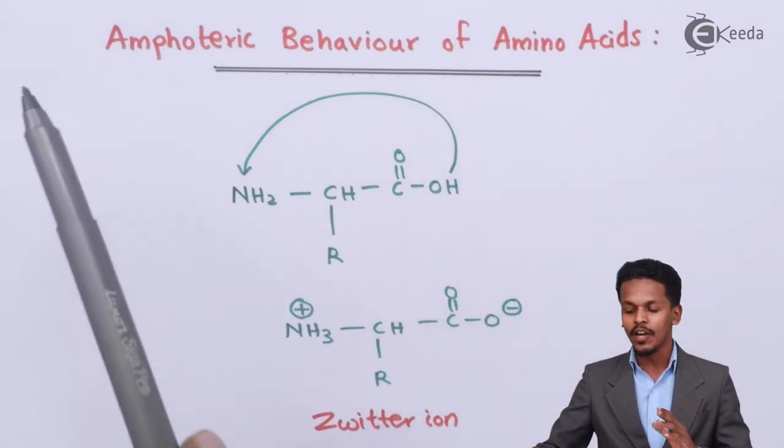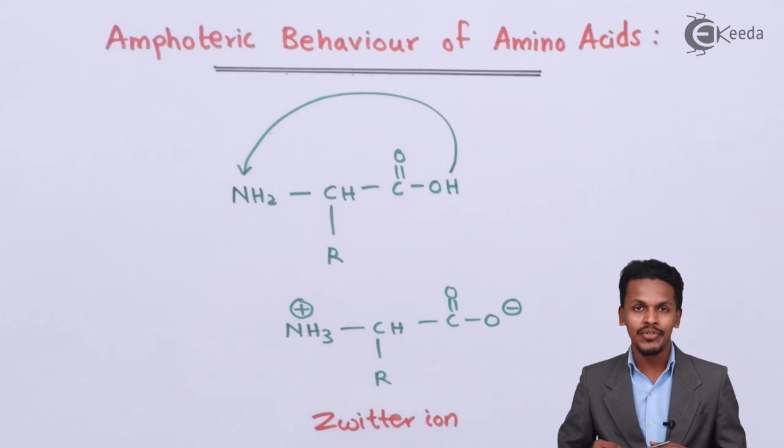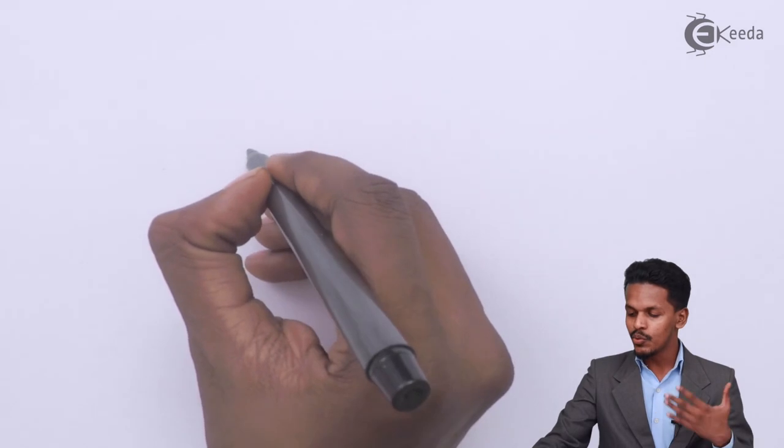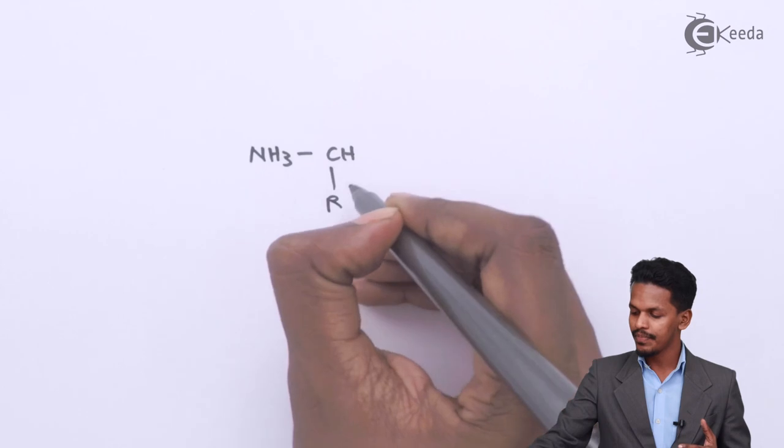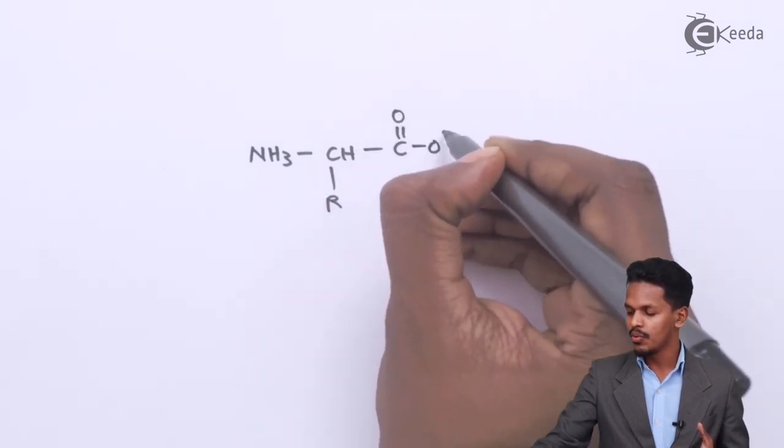Amphoteric behavior means a molecule that can act like a base or like an acid depending upon the reaction. For example, water behaves like an acid and also like a base — that's why water is called an amphoteric molecule. Based on that, let us understand how amino acids are amphoteric. The zwitterion is ⁺NH₃-CHR-C(=O)-O⁻.